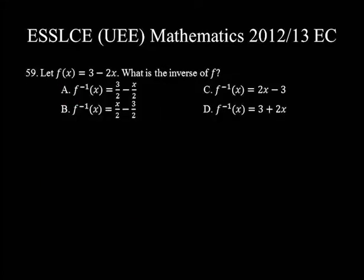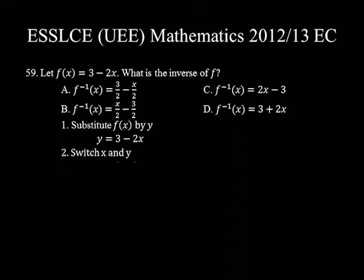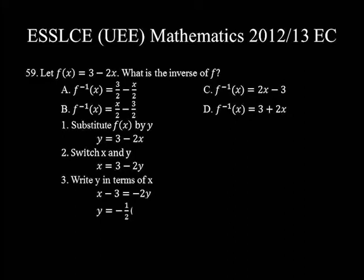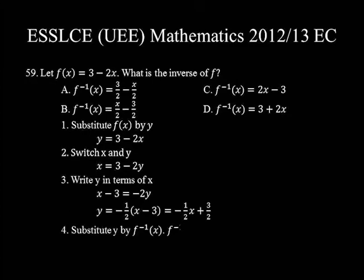Question number 59. f(x) = 3 − 2x. What is the inverse of f? Step 1: Substitute f(x) by y: y = 3 − 2x. Step 2: Switch x and y: x = 3 − 2y. Step 3: Solve for y: x − 3 = −2y, so y = (x − 3)/(−2) = −(1/2)x + 3/2. Step 4: Back-substitute y by f⁻¹(x): f⁻¹(x) = −(1/2)x + 3/2. Thus, choice A is the correct answer.